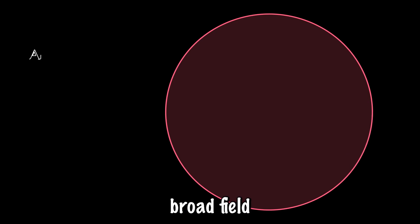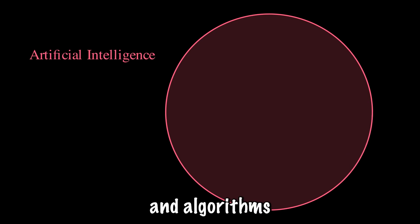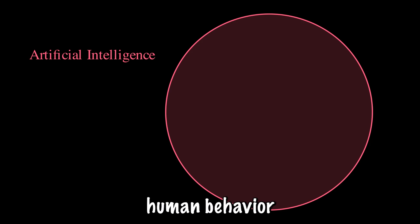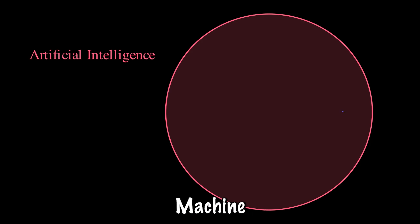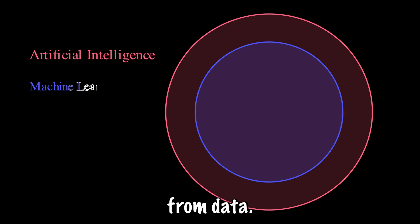Artificial intelligence, or AI, is a very broad field in which we are trying to build machines and algorithms to mimic human behavior or human consciousness. Machine learning is a subset of AI in which we are enabling machines to learn from data.